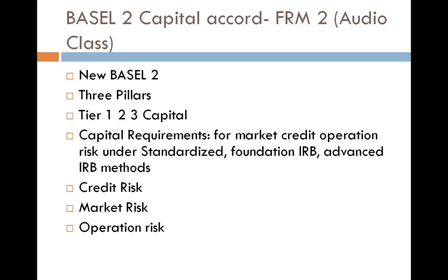Those are the three pillars of the Basel 2 Accord. Basel 2 is designed to apply to all international banks. The accord covers any holding company that may be the parent of other entities involved in banking activities, looking at an entire group on a consolidated basis. The idea is to include risk at any level of a multi-level banking group and to prevent double counting of capital.